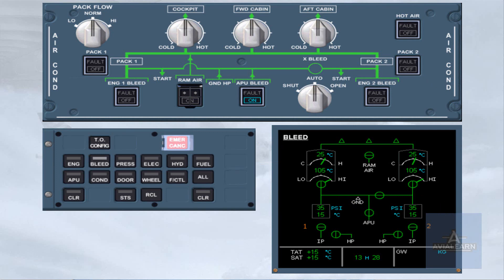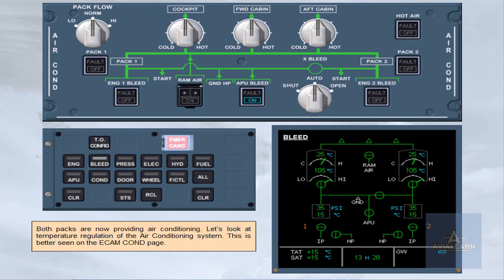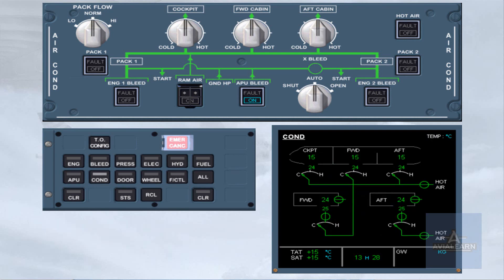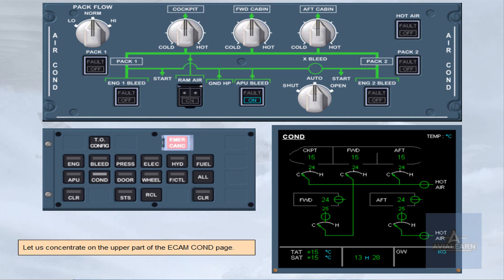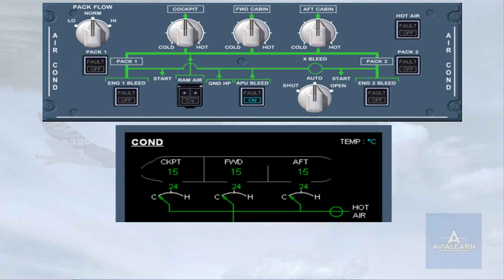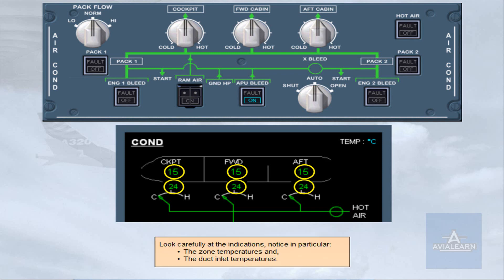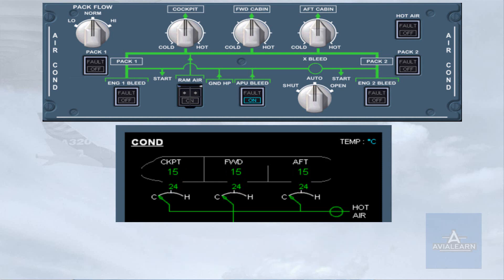Let's look at temperature regulation of the air conditioning system. This is better seen on the ECAM COND page. Let us concentrate on the upper part of the ECAM COND page. Look carefully at the indications — notice in particular the zone temperatures and the duct inlet temperatures. Temperature regulation is achieved the same way for all zones. We will demonstrate the concept using the cockpit zone as an example.